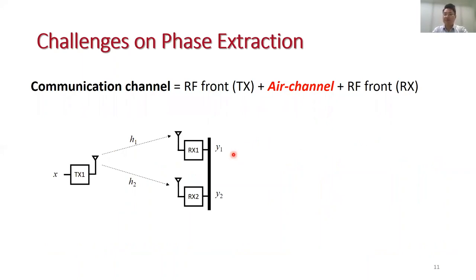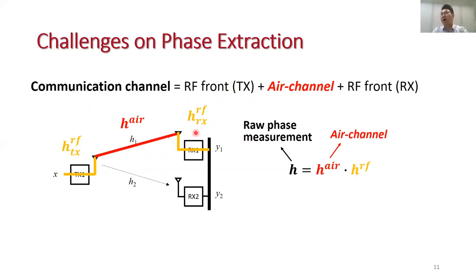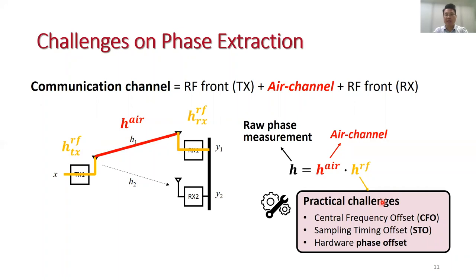So the key problem becomes how to extract channel phase from received symbols. Basically, we can measure a phase from a received symbol, but the raw phase measurements actually correspond to the phase of the end-to-end communication channel, which includes three parts: the RF front of the transmitter, the wireless channel or the air channel, and finally, the RF front of the receiver. Here, only the phase of the air channel can be used as a phase feature because air channels are relatively stable and generally do not change during the transmission of a packet. But the RF channel may include many frequency and phase offsets, which can lead to phase rotations and random changes of the measured phases. So the phase of RF channel must be removed.